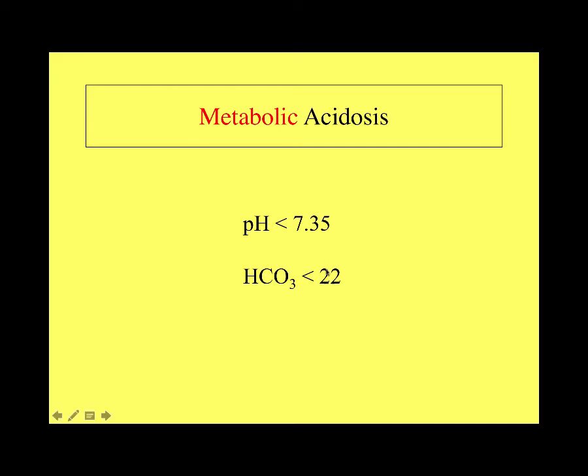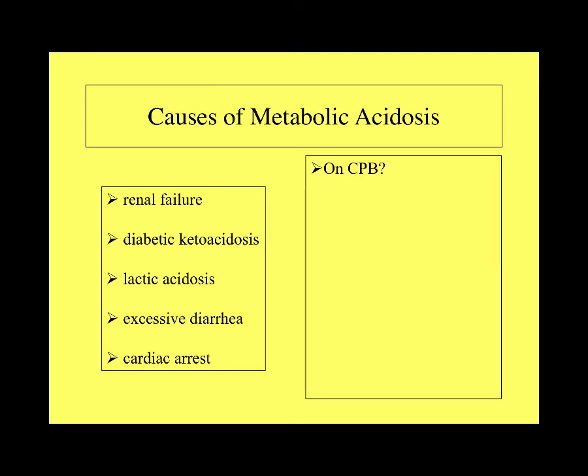Metabolic acidosis occurs when bicarbonate is below 22, driving pH into the acidotic range. Clinical causes include renal failure, diabetic ketoacidosis, lactic acidosis, diarrhea, and cardiac arrest. On bypass, metabolic acidosis develops primarily from inadequate oxygen delivery, which causes anaerobic metabolism and production of organic acids like lactic acid.